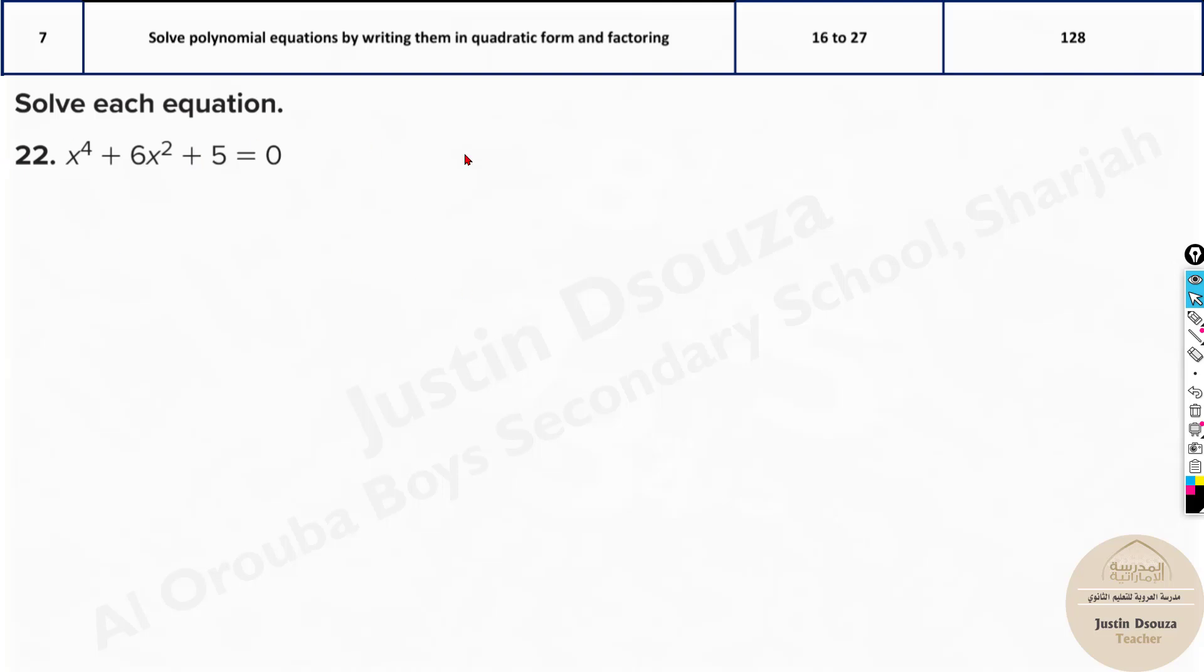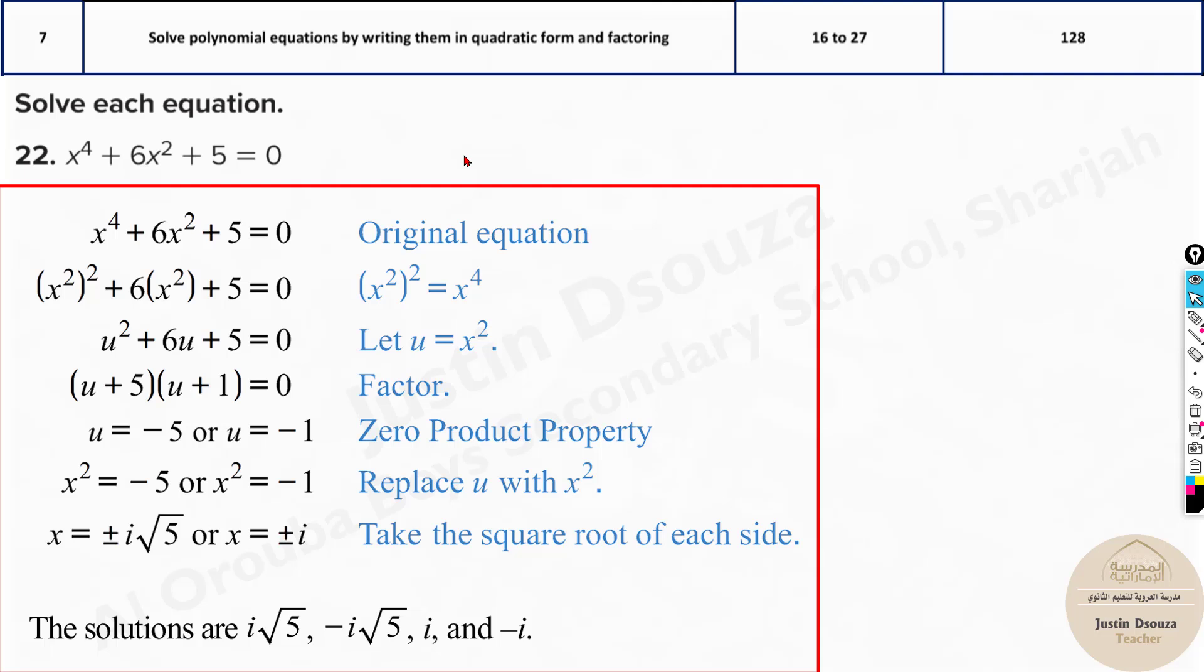Now we have to solve these equations. Solving equations we have already done a while ago. But this time there are imaginary numbers. So imaginary numbers are a little bit hard. Why? Because you can't put them in the calculator. There is no way you will get the answers. So what happens is, in such cases, you have to do the quadratic form. That is, u = x². Now write this in quadratics. That will be u² + 6u + 5 = 0.